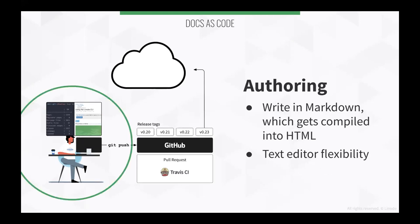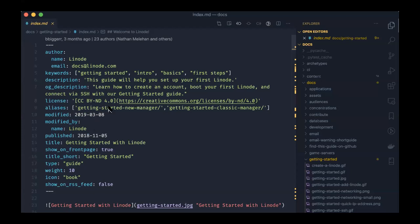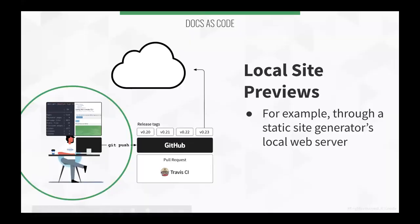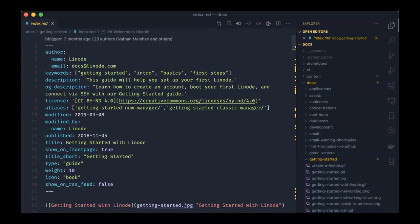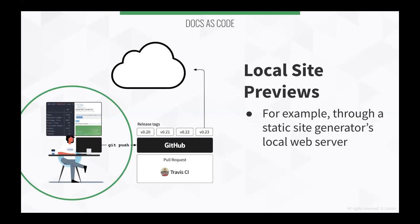The first part in the workflow is authoring. When you're writing in a Docs as Code methodology, you're usually writing in plain text — often in a dialect called Markdown. You have this metadata at the top of each guide, and then the content written in Markdown below. This gets translated into HTML web pages through a static site generator, which transmutes that plain text Markdown into a fully styled website.